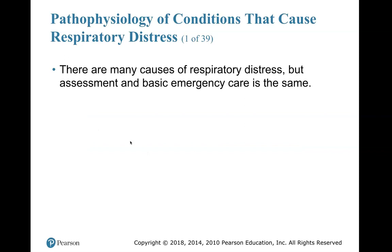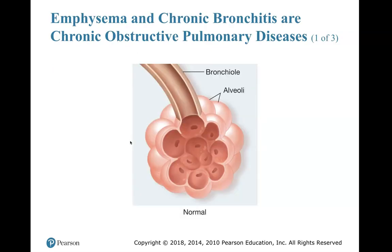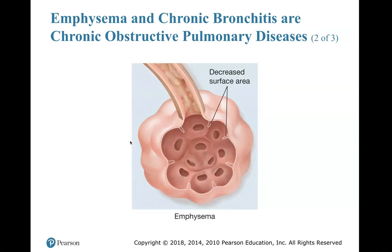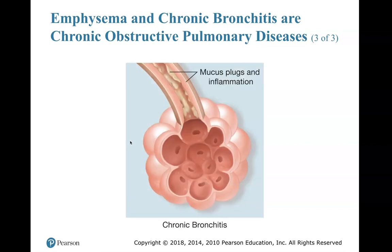There are many causes of respiratory distress, but assessment and basic emergency care is the same. That means we don't need to try to be doctors and take too long with our assessment — we need to go ahead, do our assessment, and treat the patient the same. Emphysema and chronic bronchitis are chronic obstructive pulmonary disease, or COPD. Emphysema is an inflammation of the alveoli, which gives us a decreased surface area. Chronic bronchitis leads to mucus plugs and inflammation of the bronchioles.